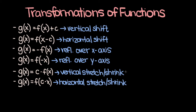Now the final way you can transform a function is by stretching or shrinking it. If you define g of x to be some constant c times f of x, then that's a stretch or shrink in the vertical direction depending on the magnitude of c. And if you have g of x is equal to f of c times x, then that's a horizontal stretch or shrink, once again depending on the magnitude of c. Now if you want a more in-depth explanation about each of these transformations, then check out the previous two videos in this course.